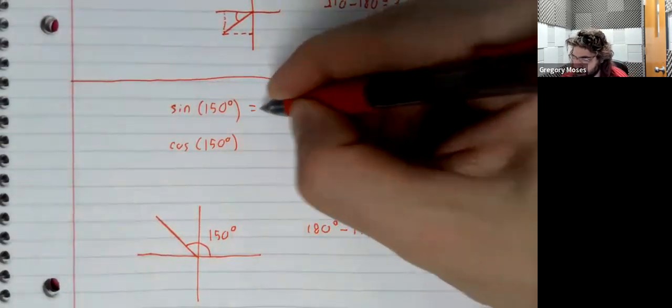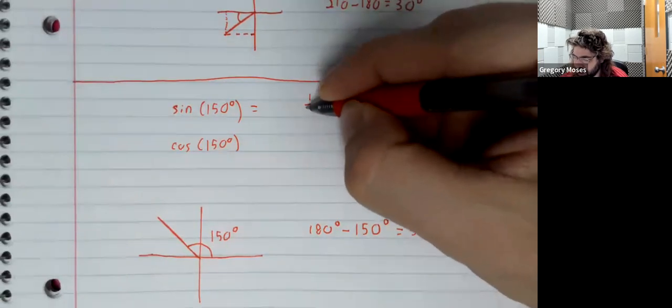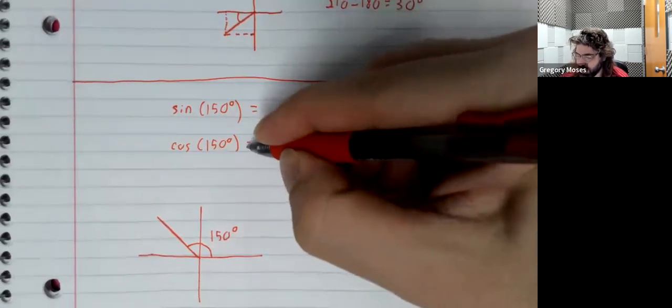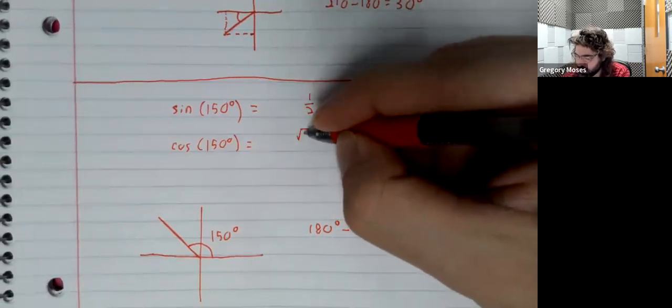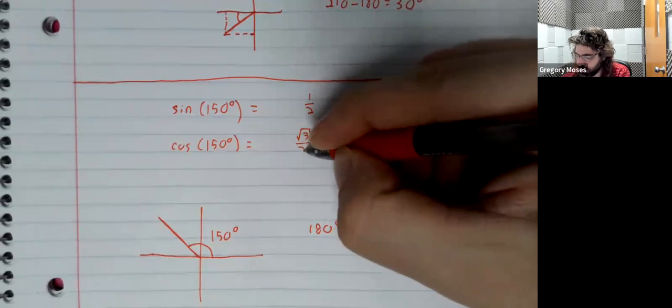The sine of 30 degrees is still one half. The cosine of 30 degrees is still the square root of 3 over 2.